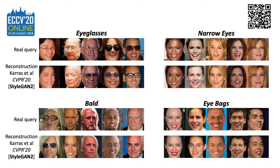However, the fair allocation of GAN performance among data subgroups has received little attention, which could lead to potential biases against minorities.